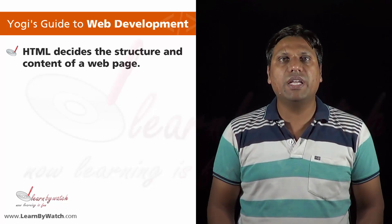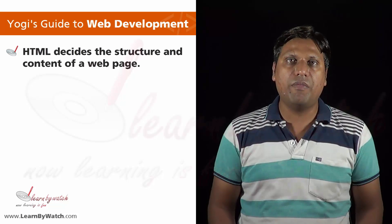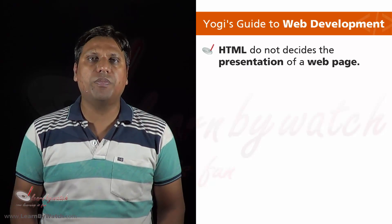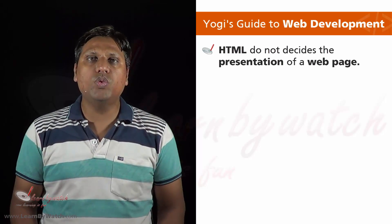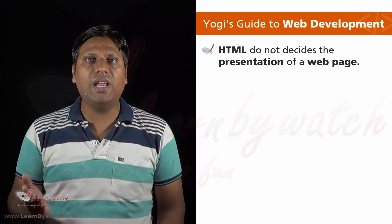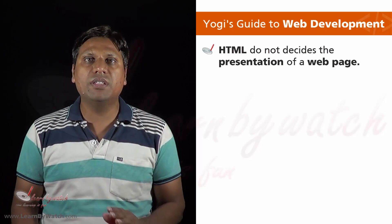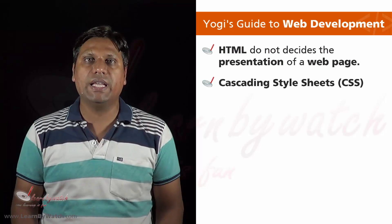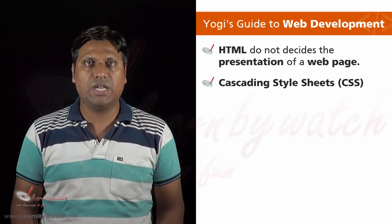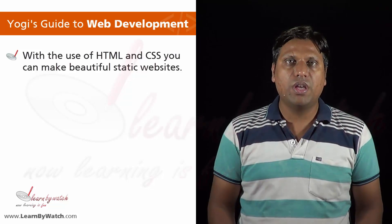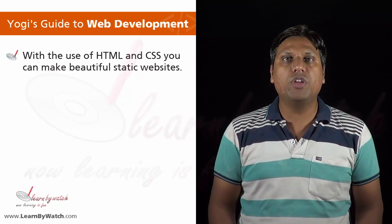HTML decides the structure and the content of a web page, but it does not define its style. So a web page made using only HTML will not look beautiful. In order to change the style, theme, or look and feel of a web page, you need to learn another language known as CSS, or Cascading Style Sheets. With the help of HTML and CSS, you will be able to make beautiful static websites.